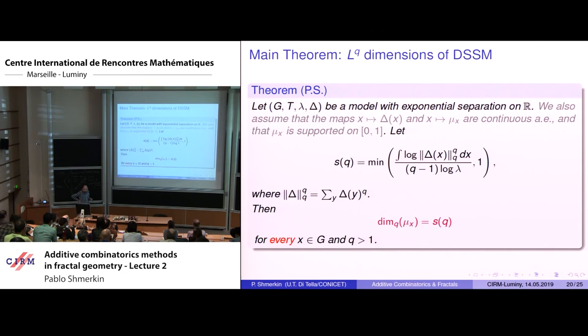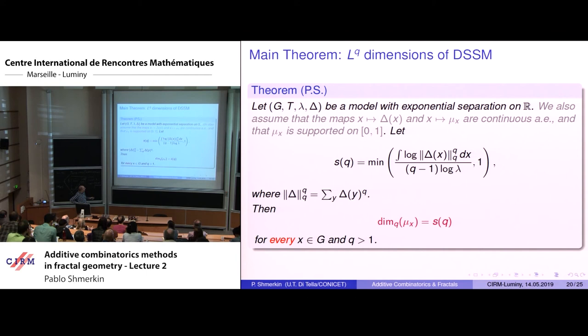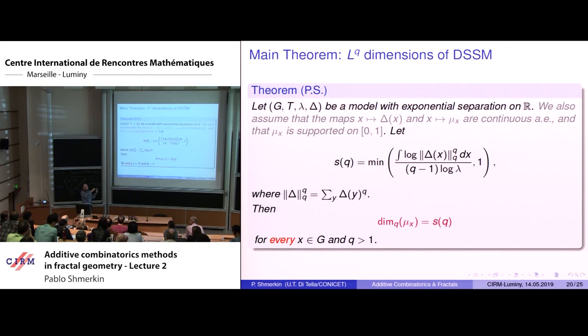The main theorem holds for these L^Q dimensions. The assumptions are exactly the same — exponential separation plus the same mild continuity assumptions. The number now depends on Q: instead of the L-infinity norm of the atomic measures, we have the L^Q norm to the Q, which means summing the masses to the Q. The conclusion holds for every element of the group and every Q > 1. The Frostman exponent case follows immediately by letting Q go to infinity. Tomorrow I will say something about the proof of this theorem.